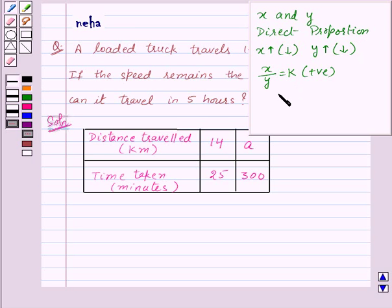In case of direct proportion, we use the relationship x1 upon y1 is equal to x2 upon y2, where y1 and y2 are the values of y corresponding to the values x1 and x2 of x respectively.